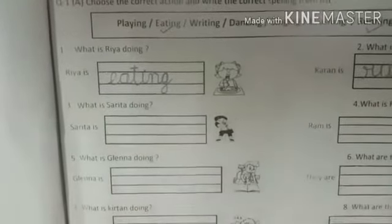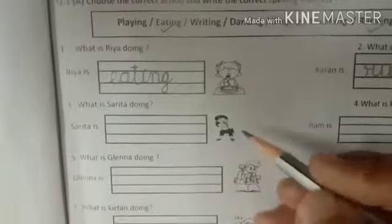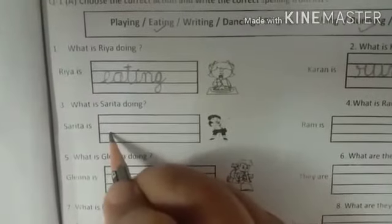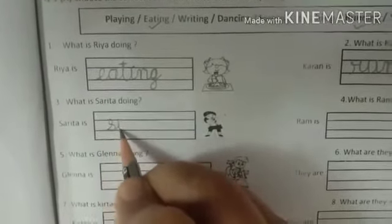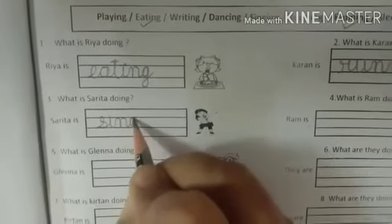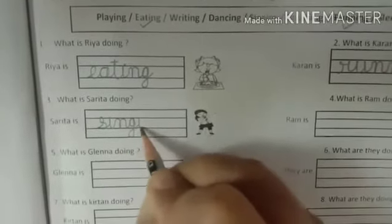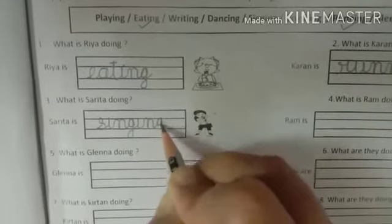Question number 3. What is Sarita doing? Sarita is singing, gana ga rahi hai. So write the spelling of singing: S-I-N-G-I-N-G, singing.